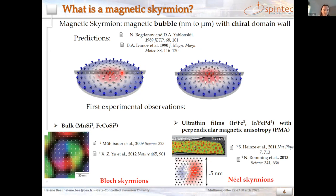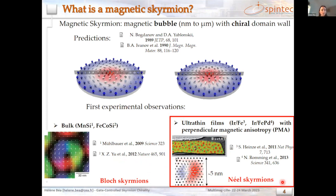Skyrmions were first experimentally observed in bulk materials in 2009, and later on in ultrathin films with perpendicular magnetic anisotropy, several years later. In this presentation, I will focus on these ultrathin films with perpendicular magnetic anisotropy. In this case, the skyrmions are of Néel type.